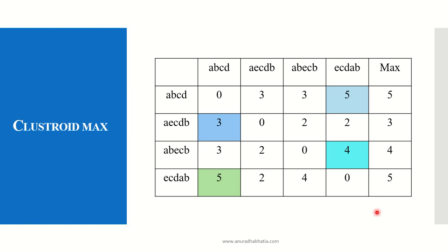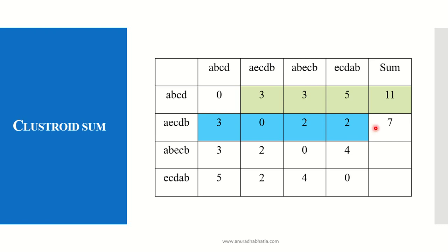The next step is to find the sum of edit distances for each string. For ABCD: 3 + 3 + 5 = 11. For AECDB: 3 + 2 + 2 = 7. For ABECB: 7 + 2 = 9. For ECDAB: 5 + 2 + 4 = 11. We now have the sum of edit distances for all strings.